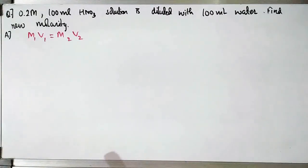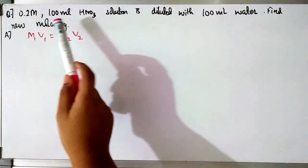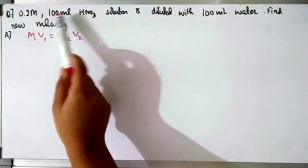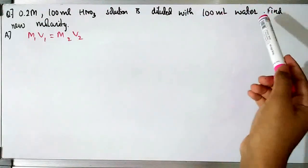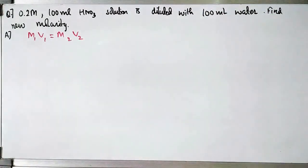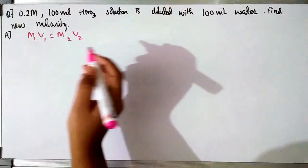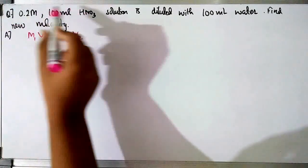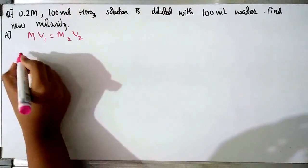In this question, a 0.2M HNO₃ solution present in 100ml of solution is diluted with 100ml of water. We have to find the new molarity. Using the formula M₁V₁ = M₂V₂, for HNO₃ we take M₁ = 0.2.